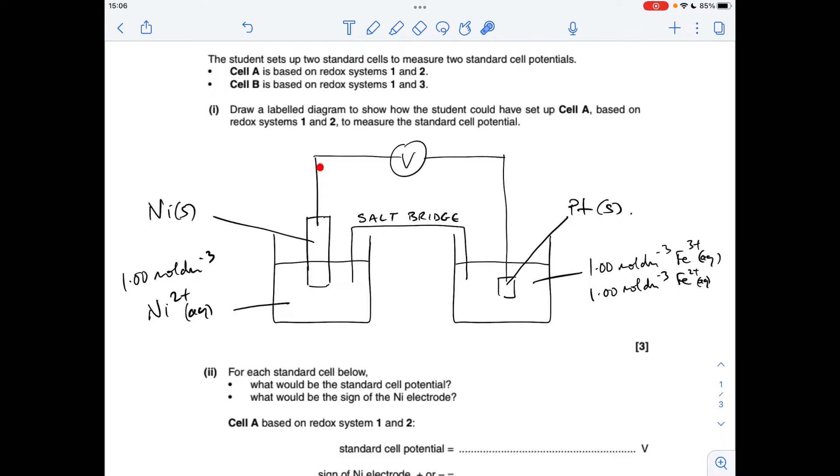Obviously that's going to be connected via a wire through a voltmeter to a platinum electrode in the Fe3+/Fe2+ half-cell, and we need to say that we've got one mole per decimeter cubed solutions of Fe3+ and one mole per decimeter cubed solutions of Fe2+.